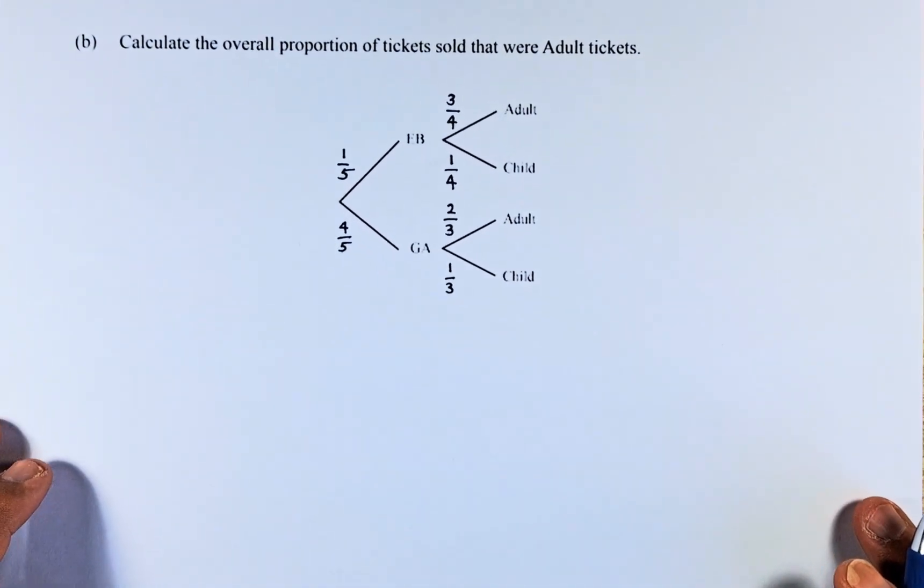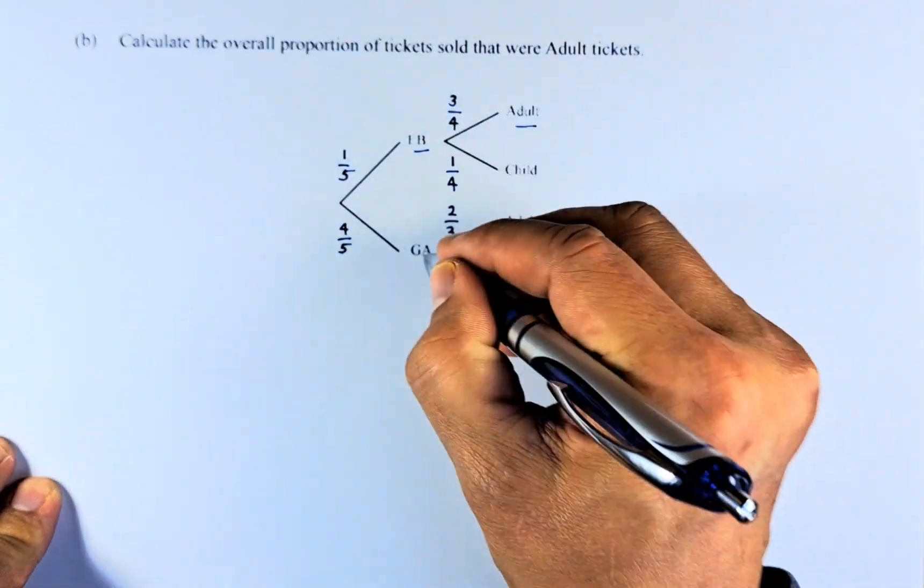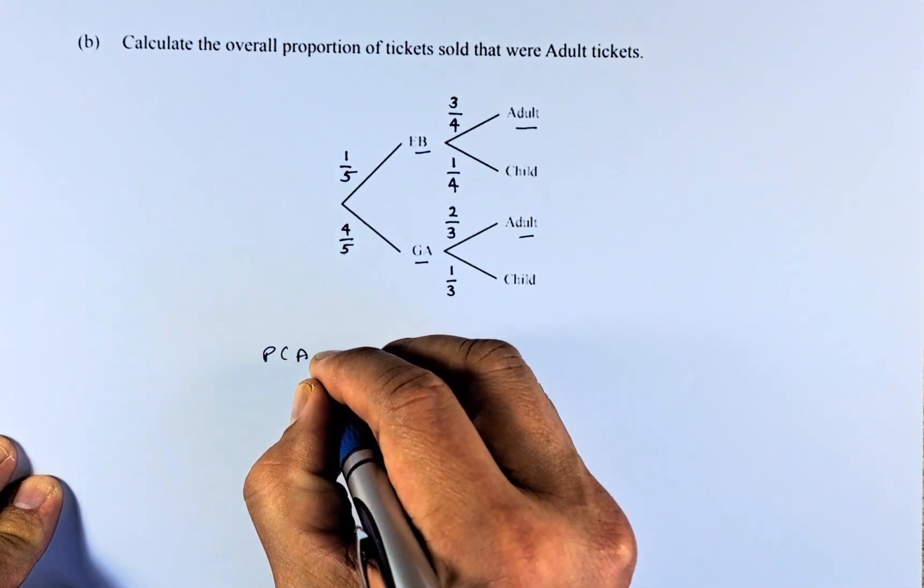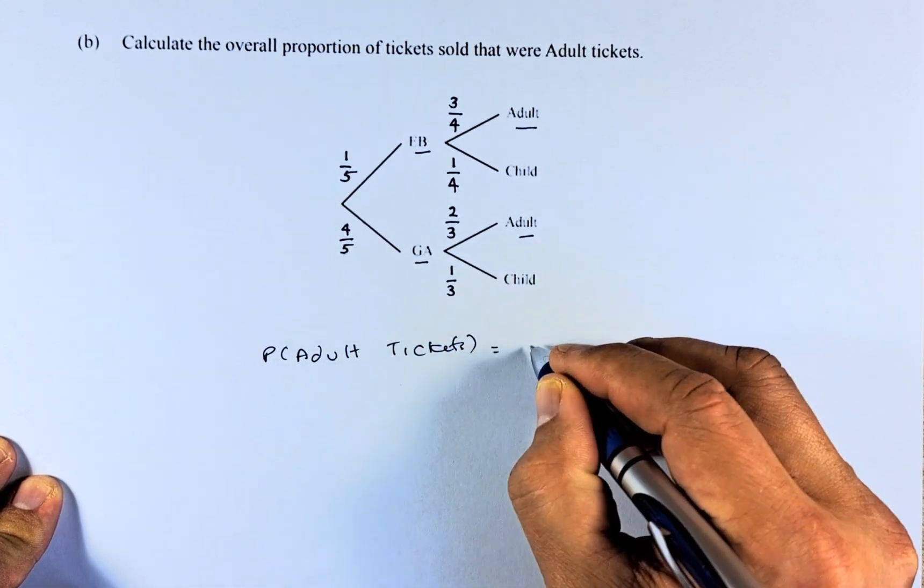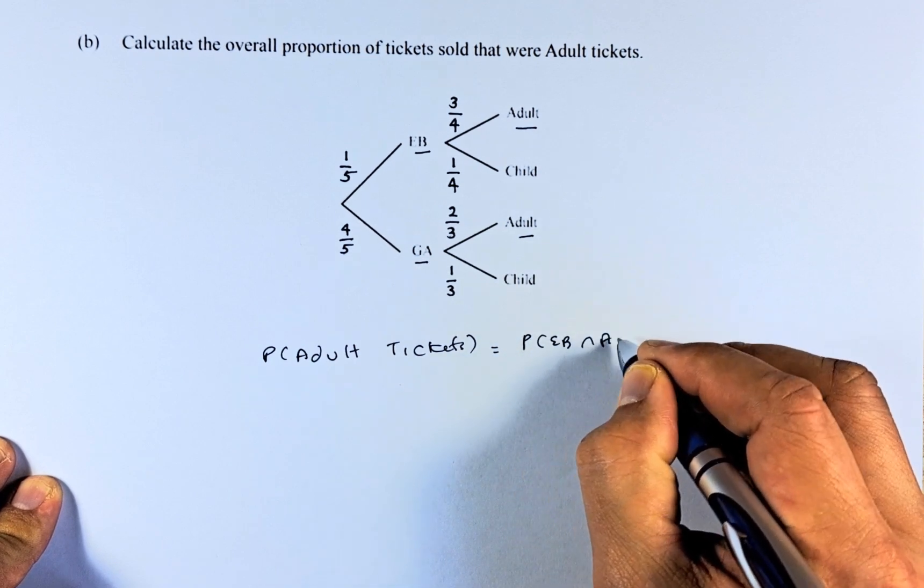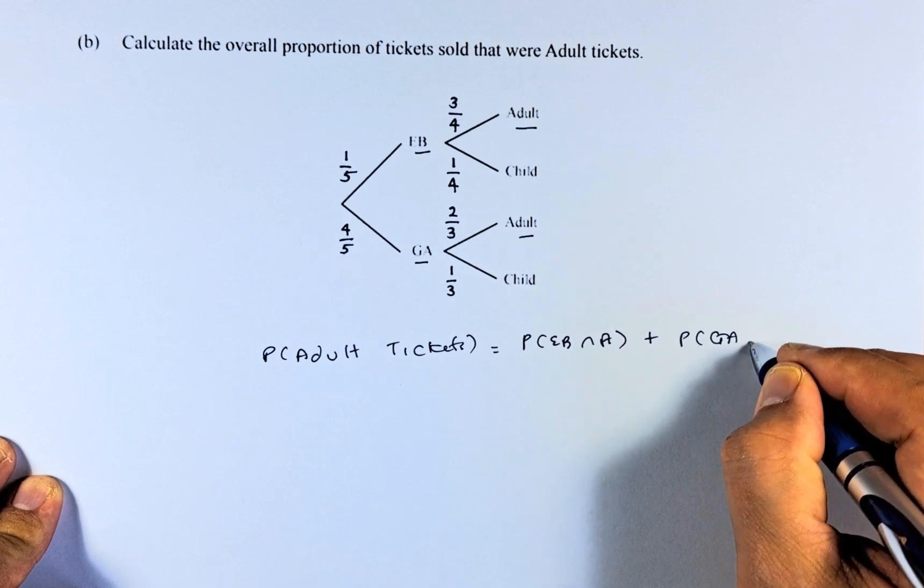Now calculate the overall proportion of tickets sold that were adult tickets. So the adults is here. So it could be early bird adult or it could be general admission adult. So probability is an adult ticket. We're going to write them down. Adult tickets is going to be either the probability of early bird and adult, or you add them up, probability of general admission and adult.